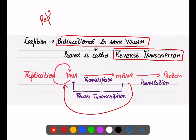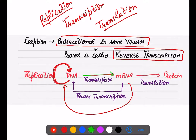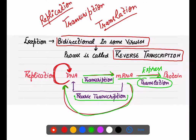In this chapter, we will read three main processes: replication, transcription, and translation. Replication means DNA producing more copies of DNA. Transcription means DNA producing mRNA. In viruses, mRNA changing back into DNA is called reverse transcription. Finally, mRNA is expressed into protein through translation. These three processes — replication, transcription, and translation — are what we have to study in complete detail.